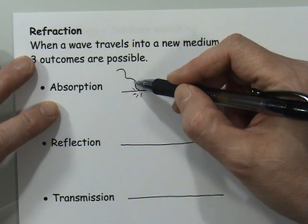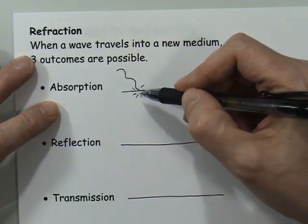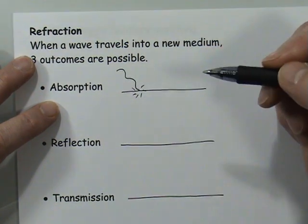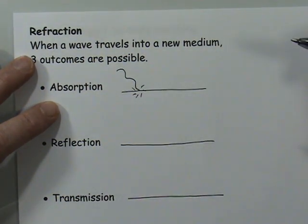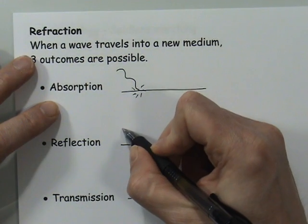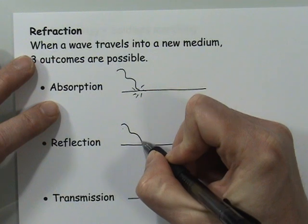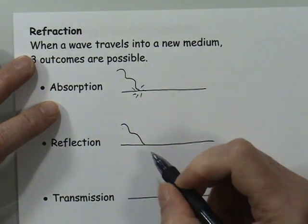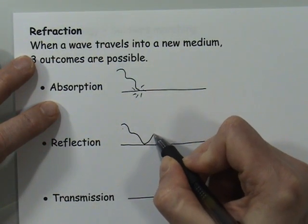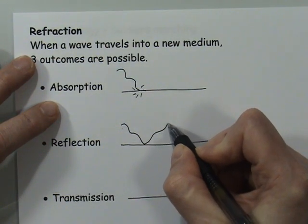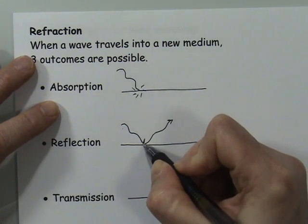For example, the energy from light waves can turn into electrical energy in a solar panel — but essentially the wave ceases to exist. Another possibility is that the wave comes in and instead of being absorbed by the surface, it is reflected by the surface and goes out in a new direction.